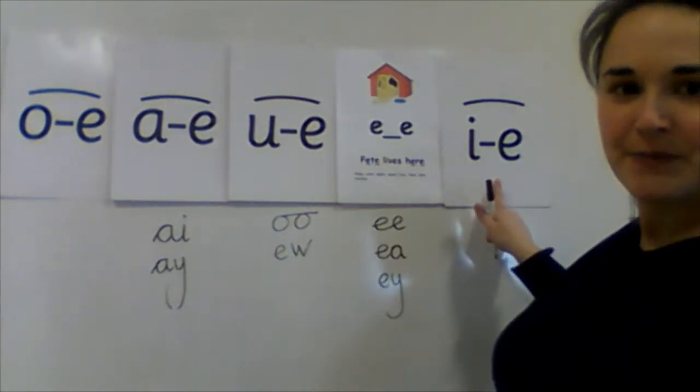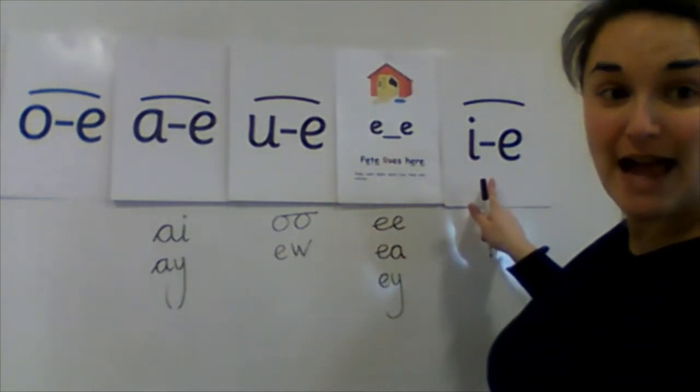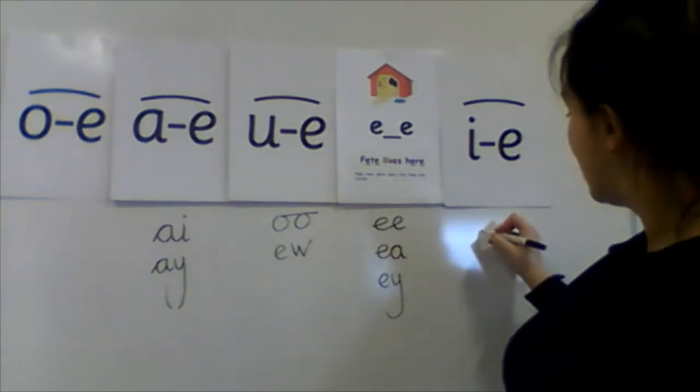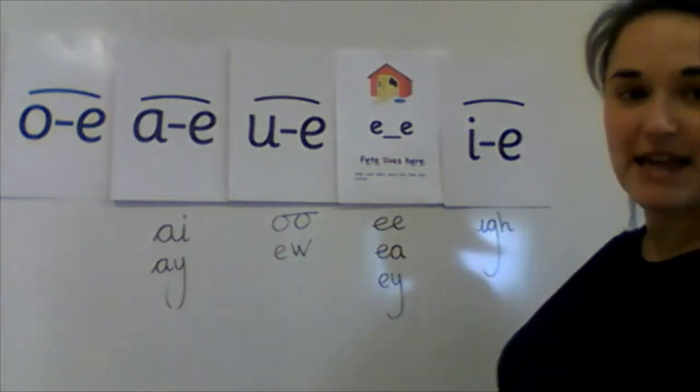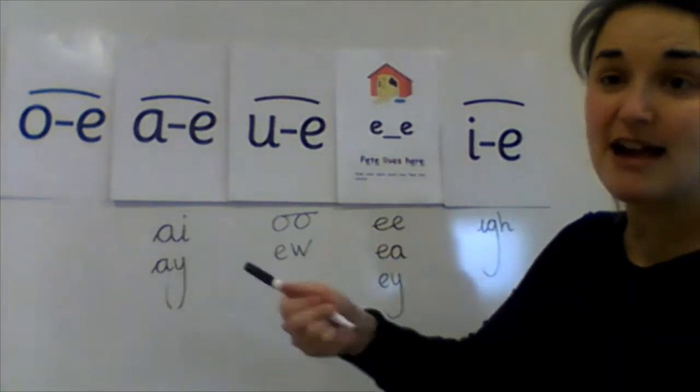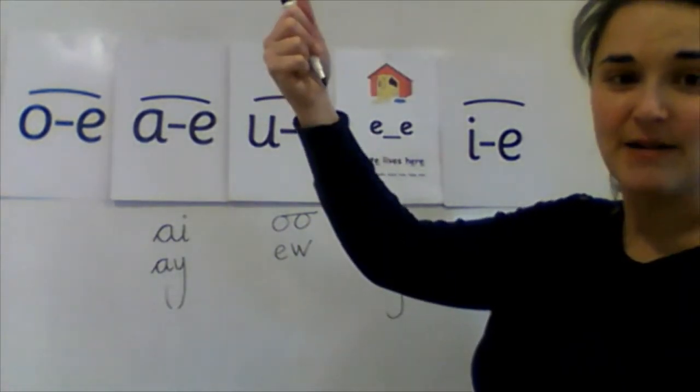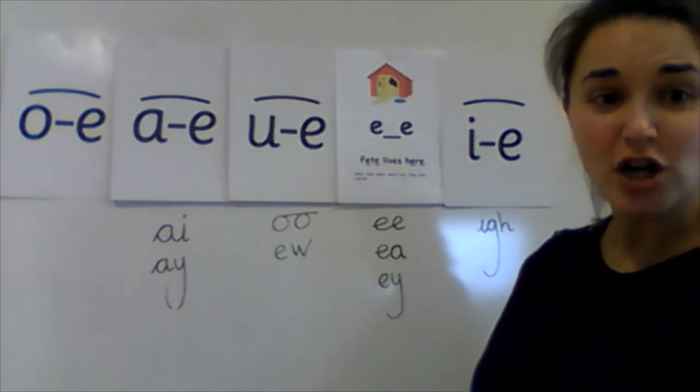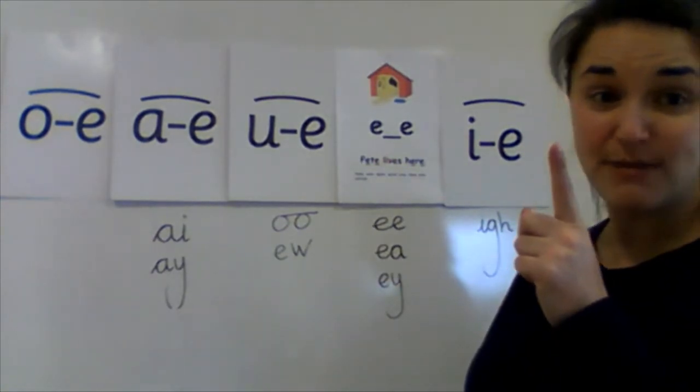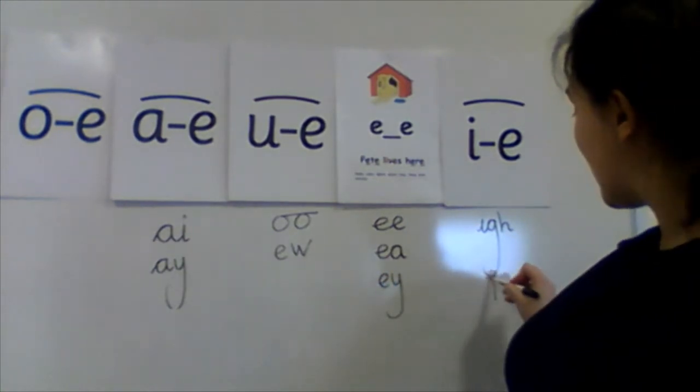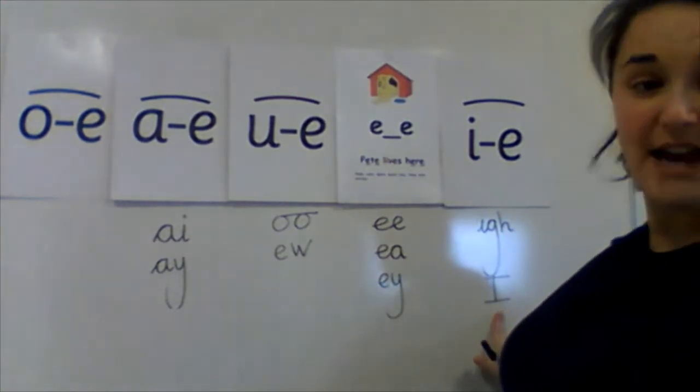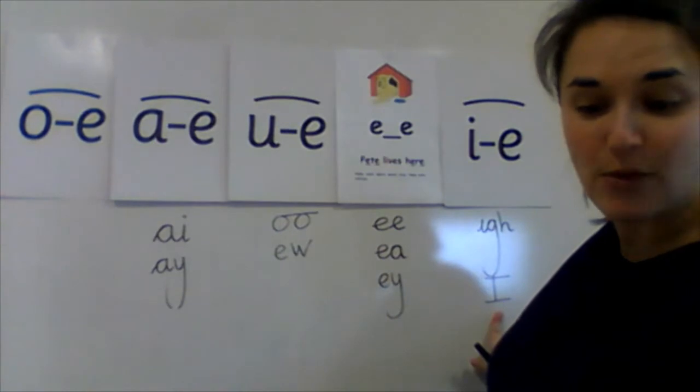I. There is a trigraph that makes the I sound. I-G-H. The I-G-H fly high. And there's also a tricky word where it's just one letter but it makes the I sound. It's our capital I, which can be an I. I wonder if you remembered that one?